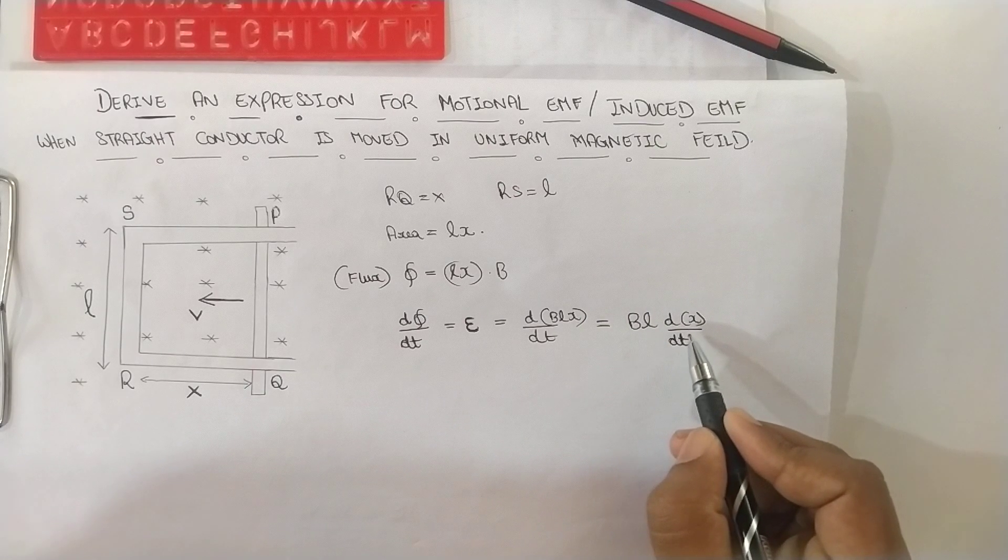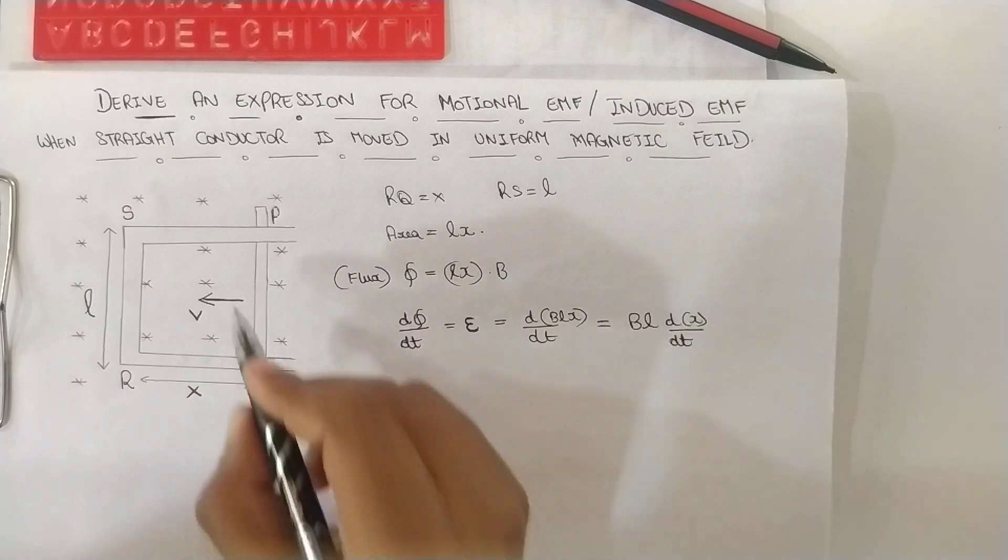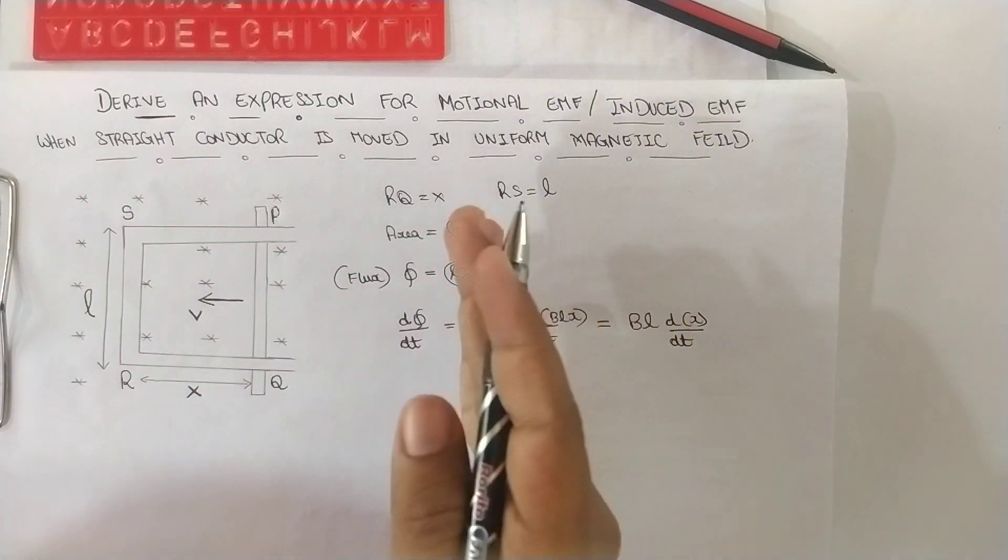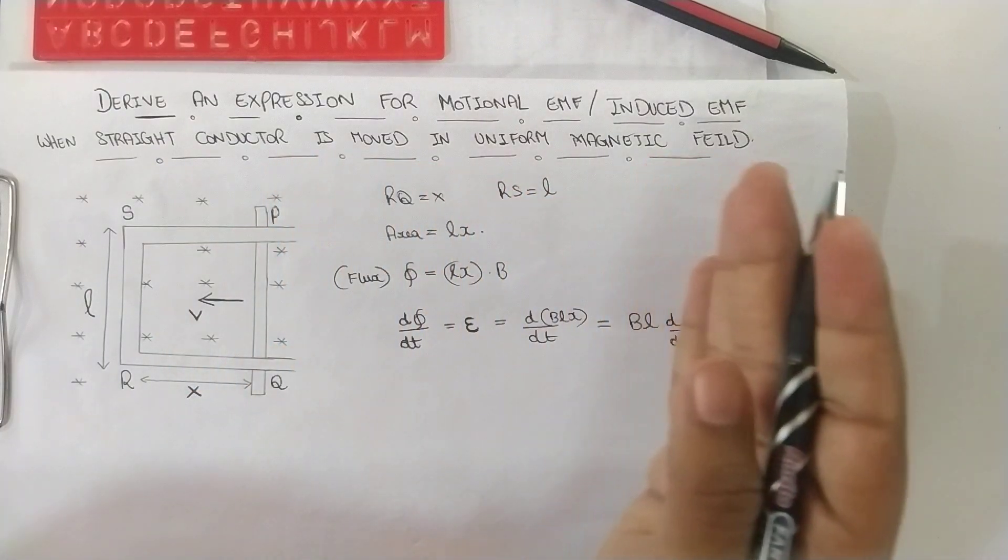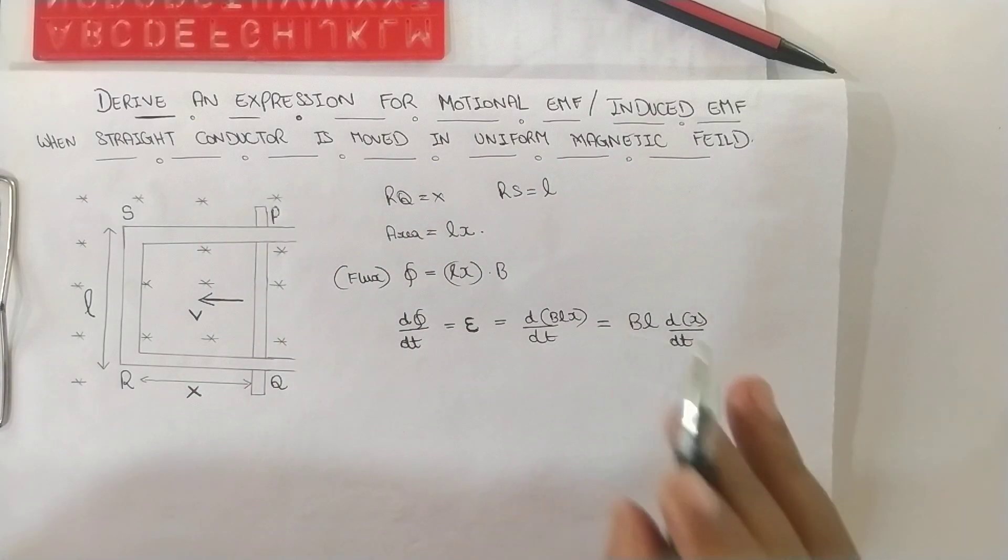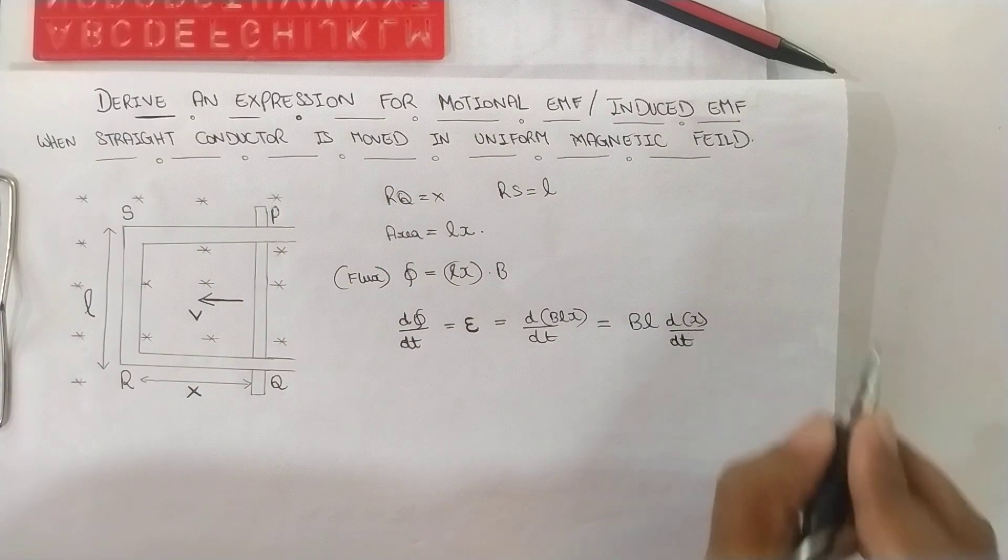Now why we are not taking breadth as a constant? Because we have PQ which is movable. It can change with respect to time. So dx by dt is kept as it is. It is a variable.